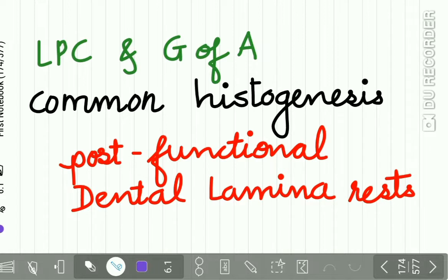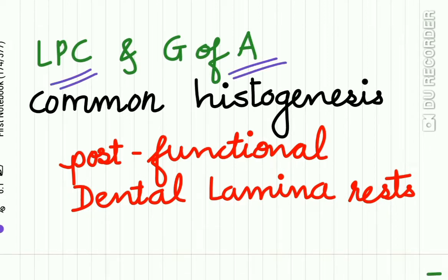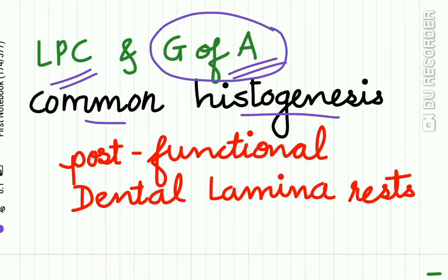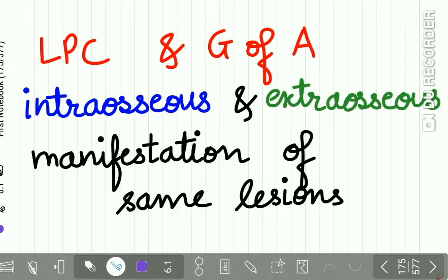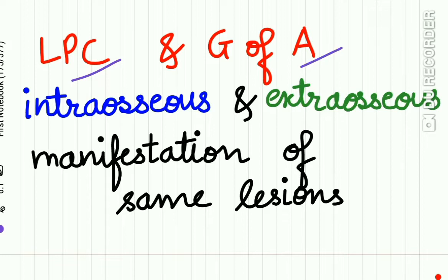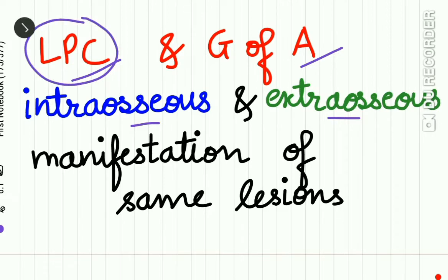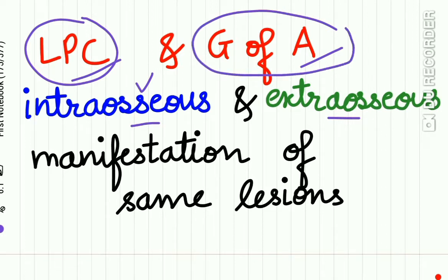The lateral periodontal cyst and the gingival cyst of adults share common histogenesis — both originate from post-functional dental lamina rests. We can say that the lateral periodontal cyst is the intraosseous or central manifestation, while the gingival cyst of adults is the extraosseous or peripheral manifestation of the same lesion.